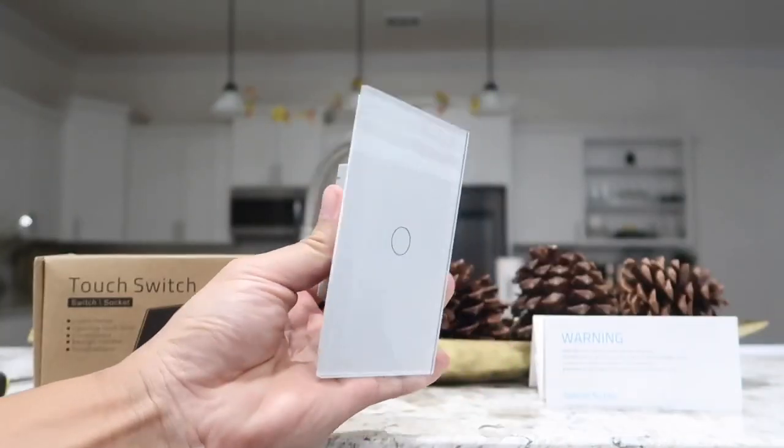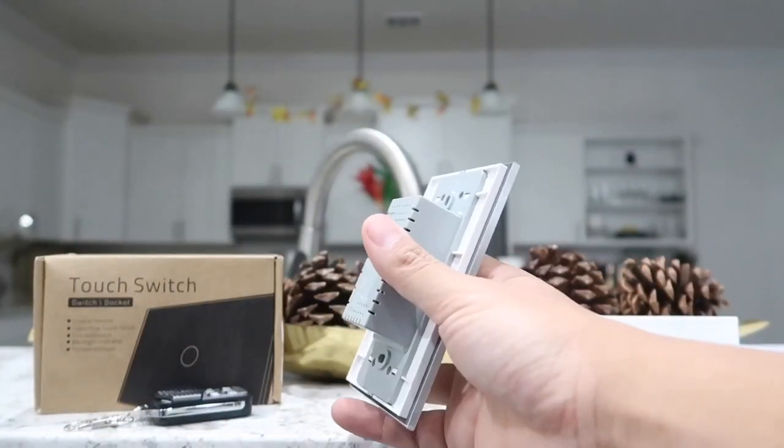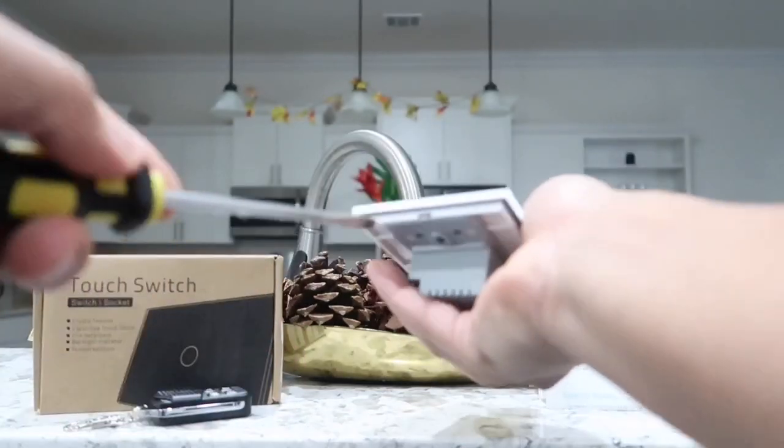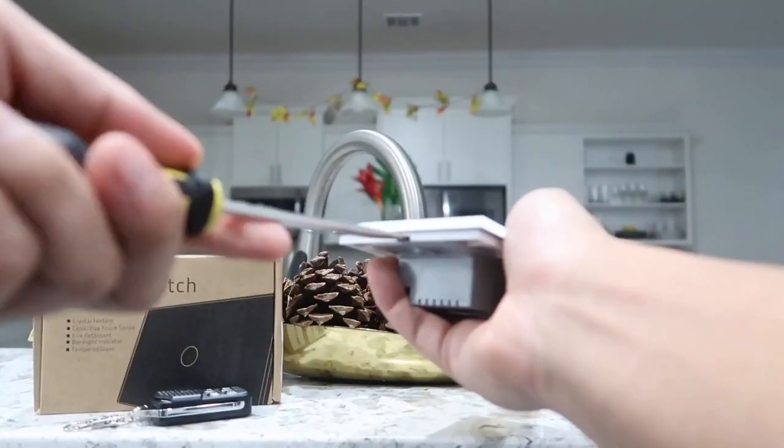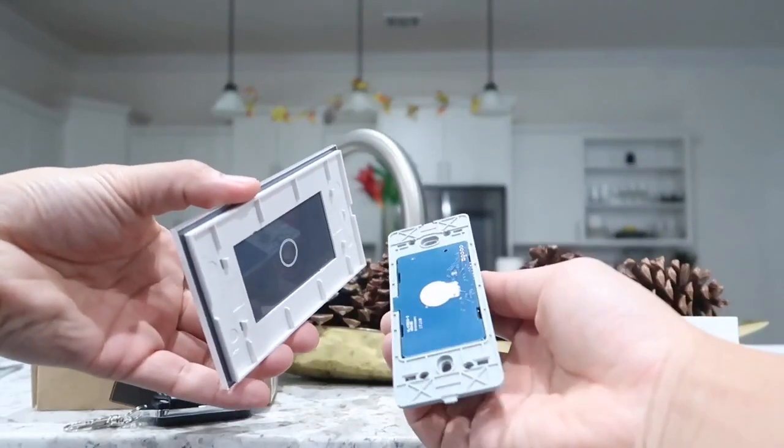So the light switch comes with a tempered glass panel already attached to the box. And to install the switch, the first step we need to do is to take a flat head screwdriver and insert it here. And with a light twist, the panel and box will separate. Now we can actually start to install it.